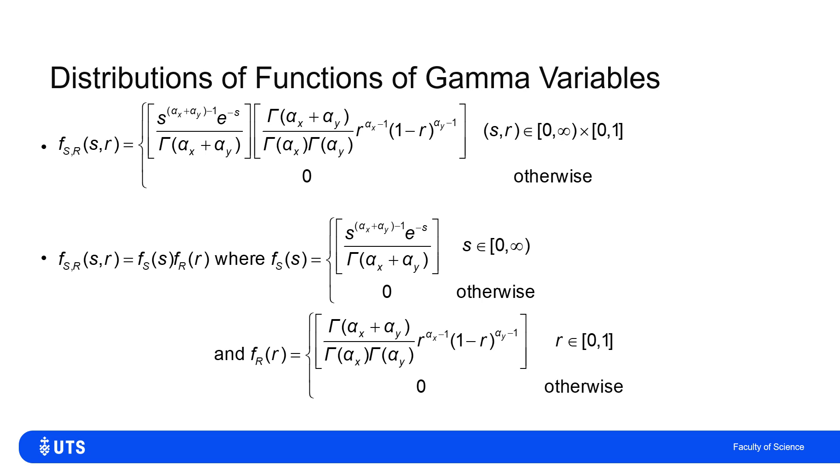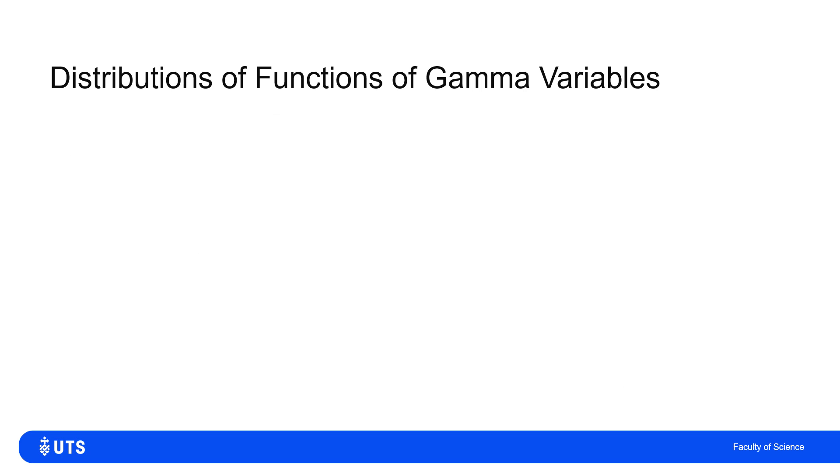And the S is just a gamma variable. It's exactly what I started with for X or for Y, except instead of having first parameter alpha X or alpha Y, it has first parameter alpha X plus alpha Y.